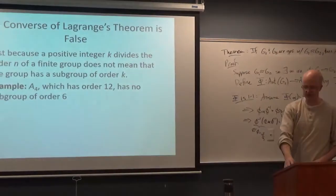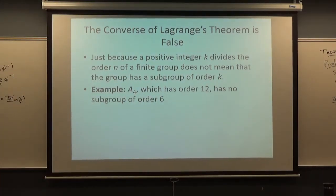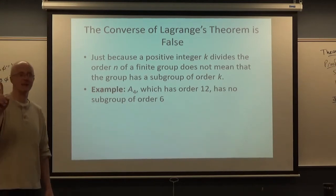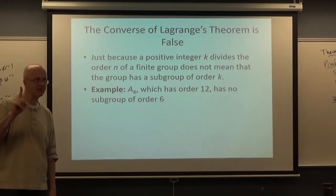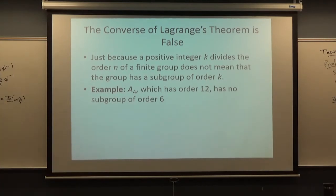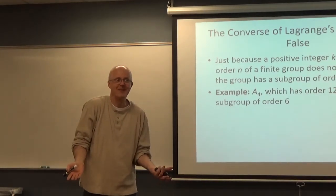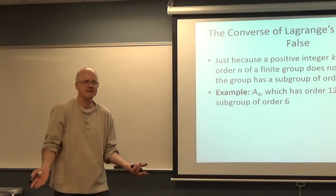Remember I said last time that the converse to Lagrange's theorem is false. One counterexample is good enough to verify any statement is false. One example is that A4, which has order 12, right? 4 factorial divided by 2. Turns out to have no subgroup of order 6. I mentioned this last time that you should study the proof in the book. It's a tricky proof, but I thought it was an interesting proof. Cool proof. And I said, you should maybe be able to do it on the exam, maybe with some hints. Okay? I'm not going to write out the proof fully for the sake of time, but let's just go over the idea of the proof.